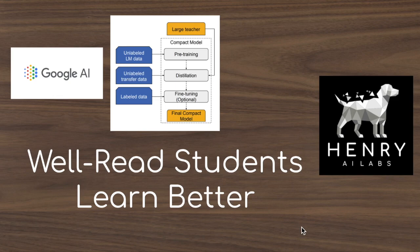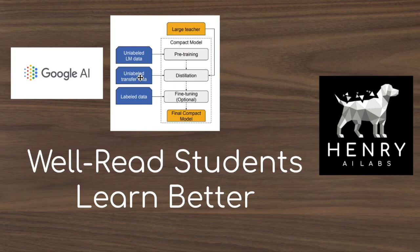Thanks for watching this overview of 'Well-Read Students Learn Better.' This paper shows that it helps to pre-train the student models — the compact models better suited for resource limits, avoiding out-of-memory errors and having faster inference times — with masked language modeling before doing knowledge distillation from pre-trained models like those in the Hugging Face Transformers library. This pipeline of pre-training, then distillation, then fine-tuning is robust to the size of the unlabeled transfer data, the in-domain composition, and with respect to the depth-width trade-off, it's better to have a deeper transformer model than a larger hidden dimension. Thanks for watching and please subscribe to Henry AI Labs.